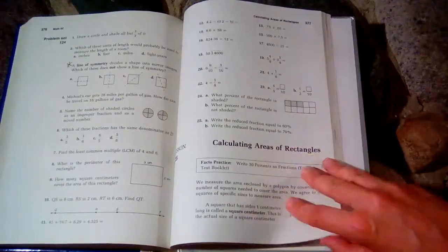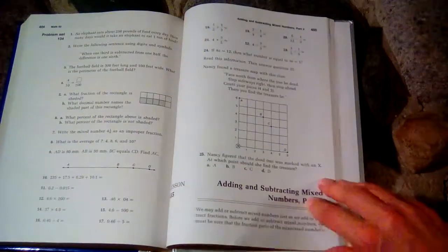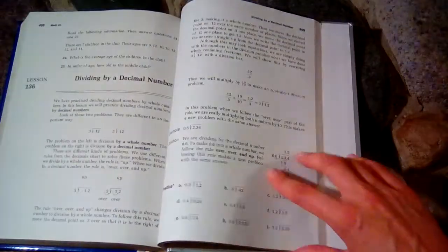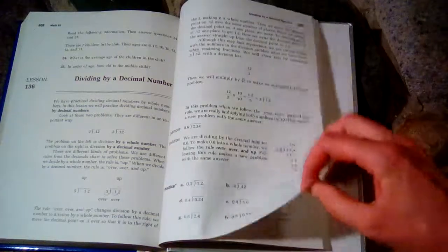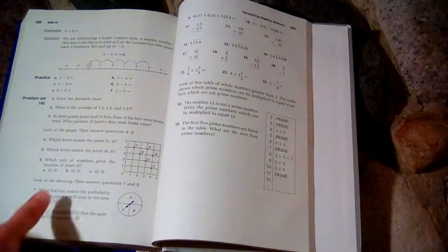This is what the first edition looks like, and these are the kinds of problems toward the end of the book. For the second edition, I have some other things to show you.